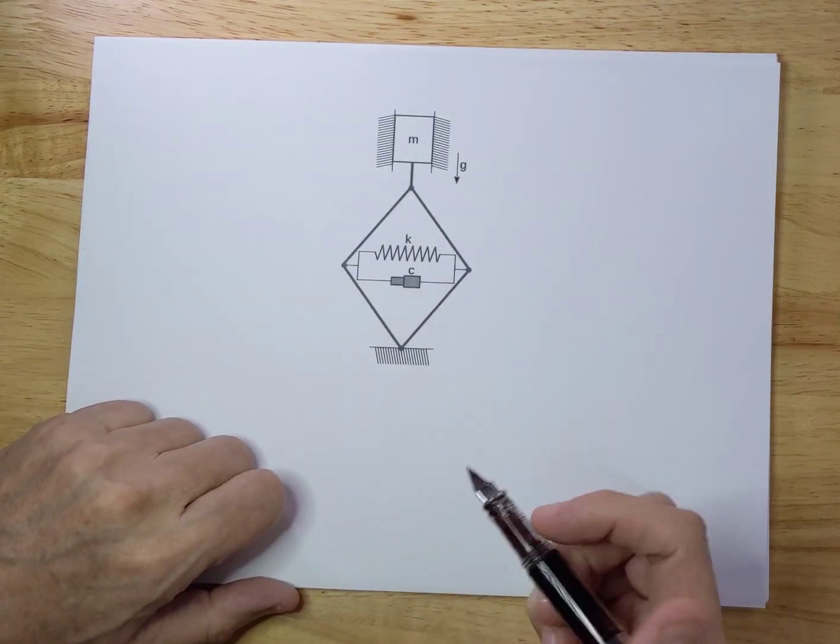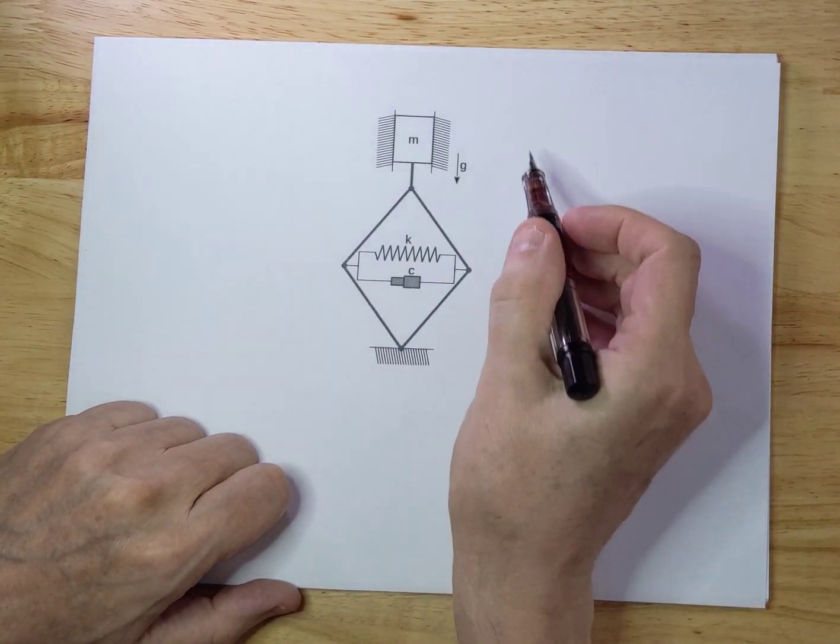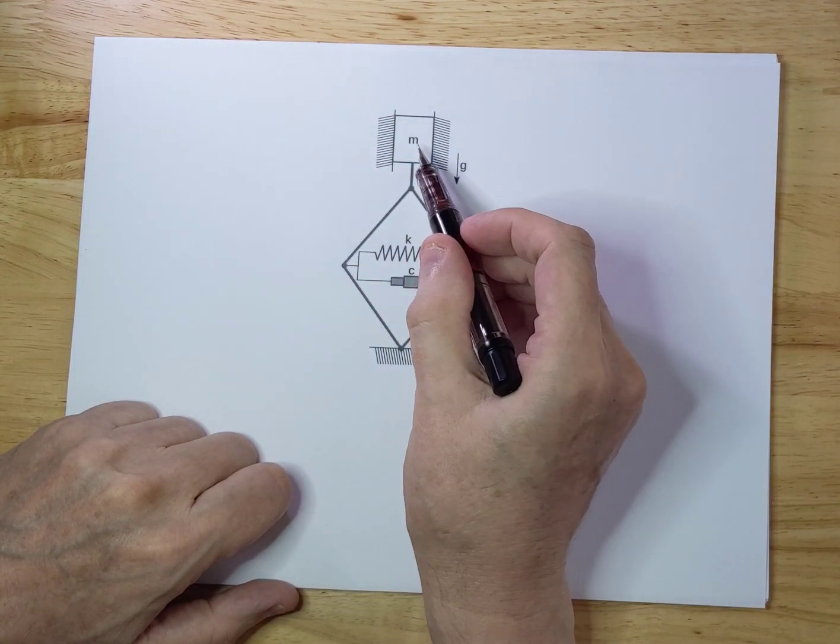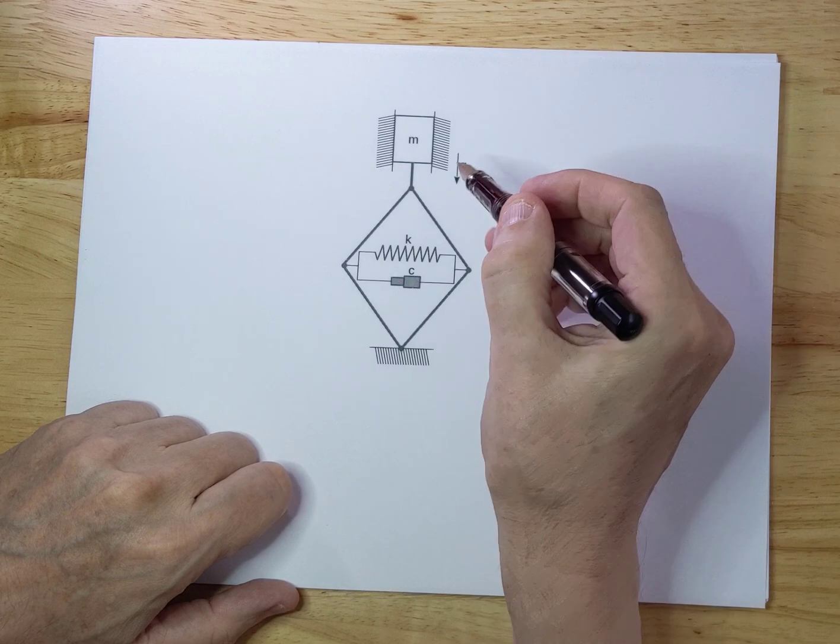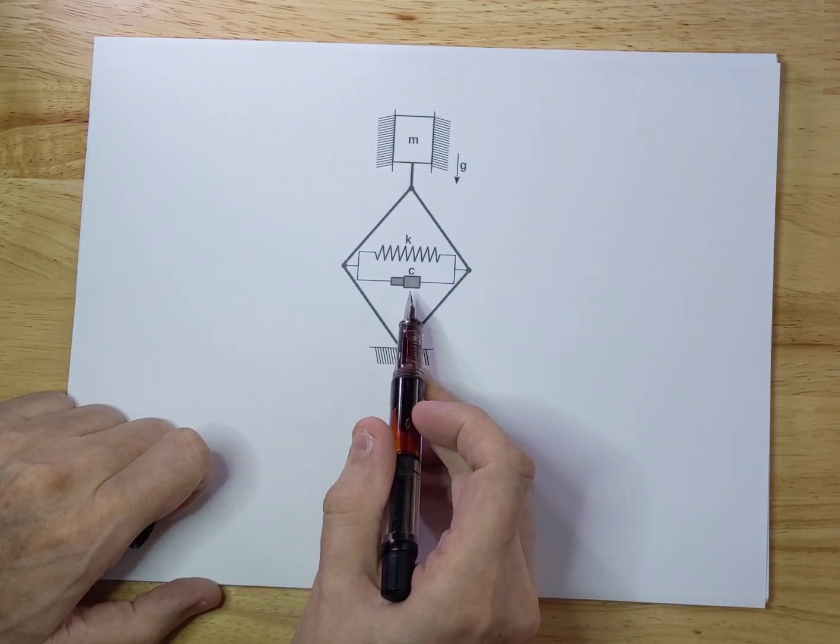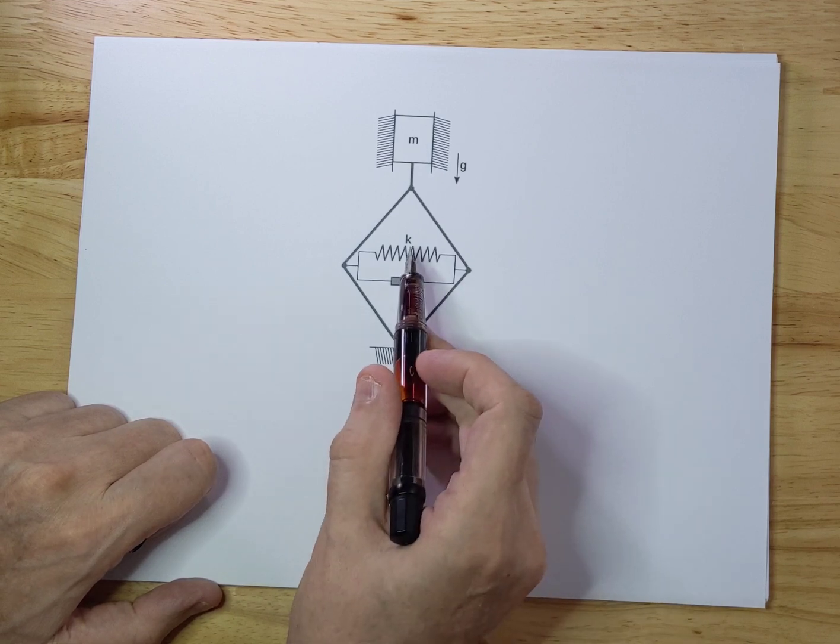Today I'm going to talk about a second order dampening system. The dampening system is depicted over here. We have a mass, we have gravity acting downwards, and we have a spring and a damper with constant C, and the spring has a constant K.